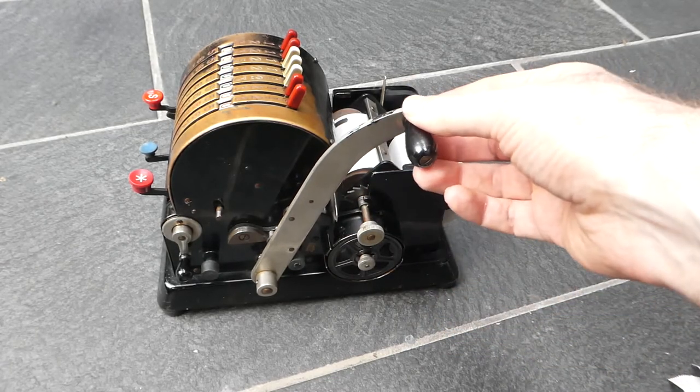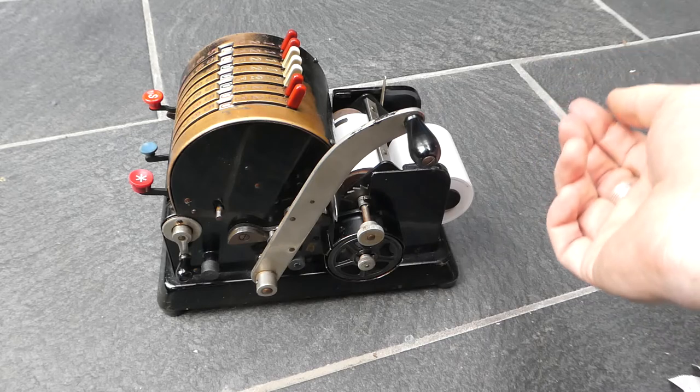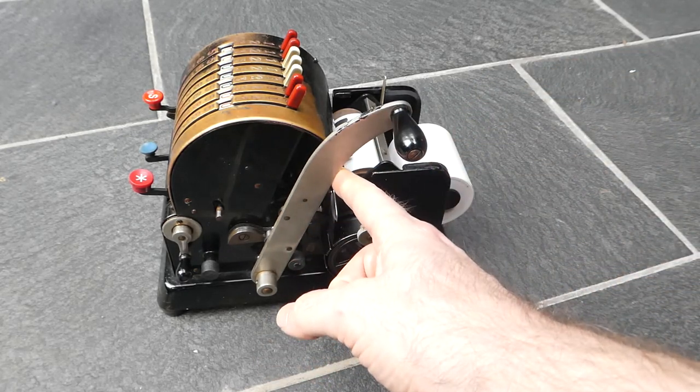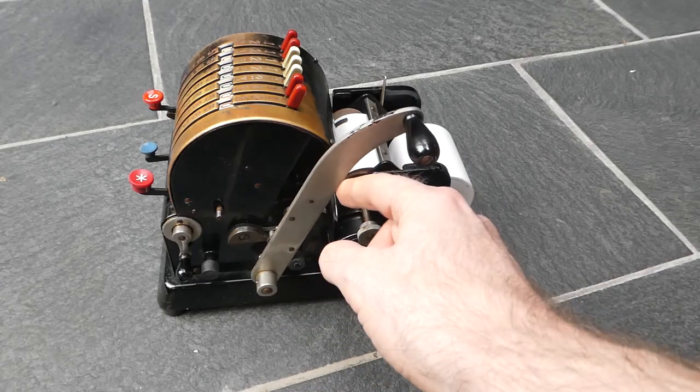Later versions of the machine fixed this design flaw by moving the rubber stopper to up here so that it can't shoot through too far.